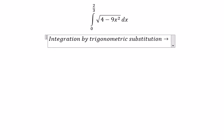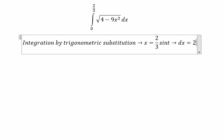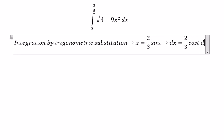So we put x equal to 2 over 3 sine t, dx equal to 2 over 3 cosine t dt.